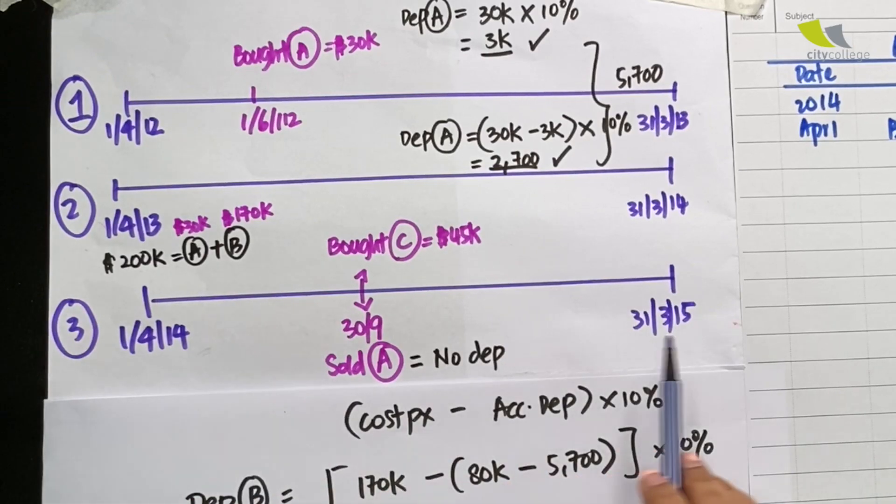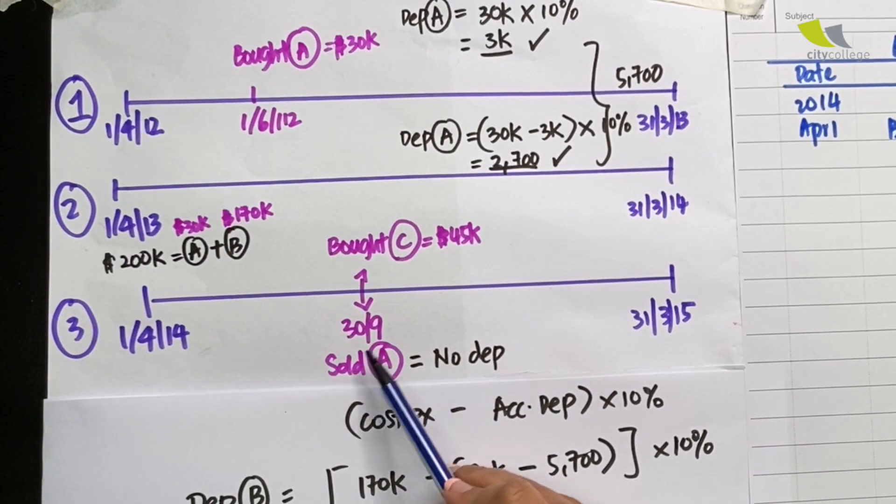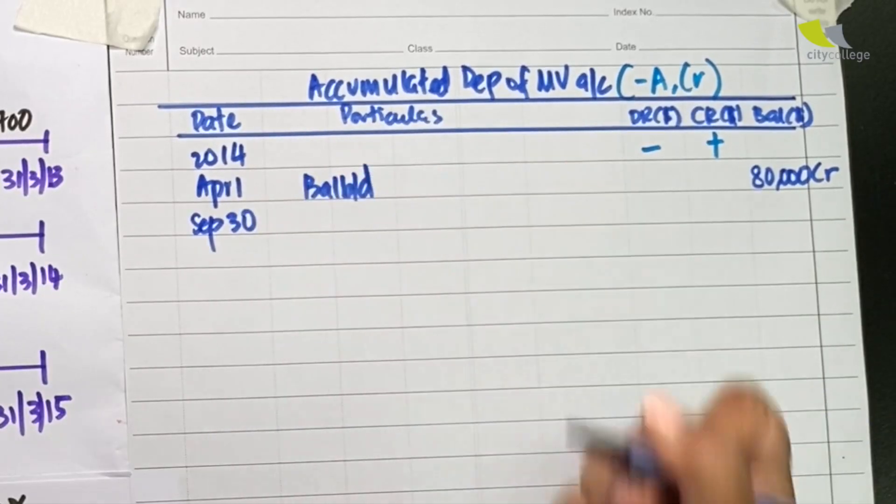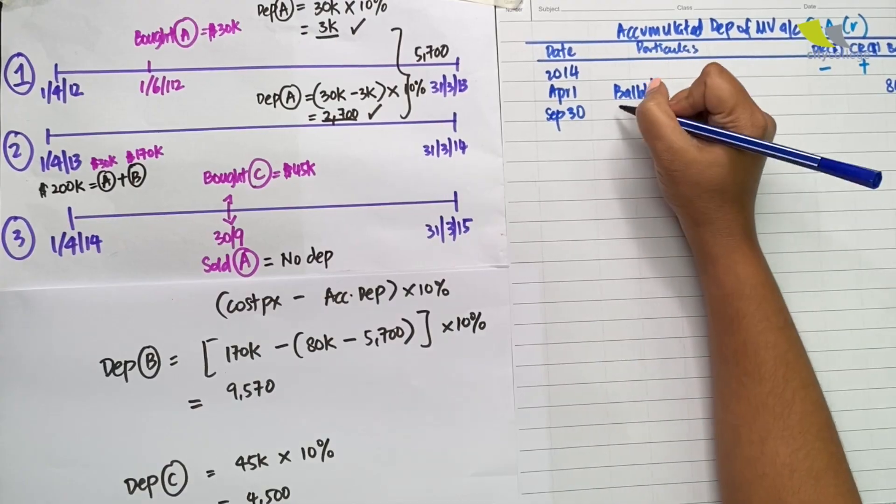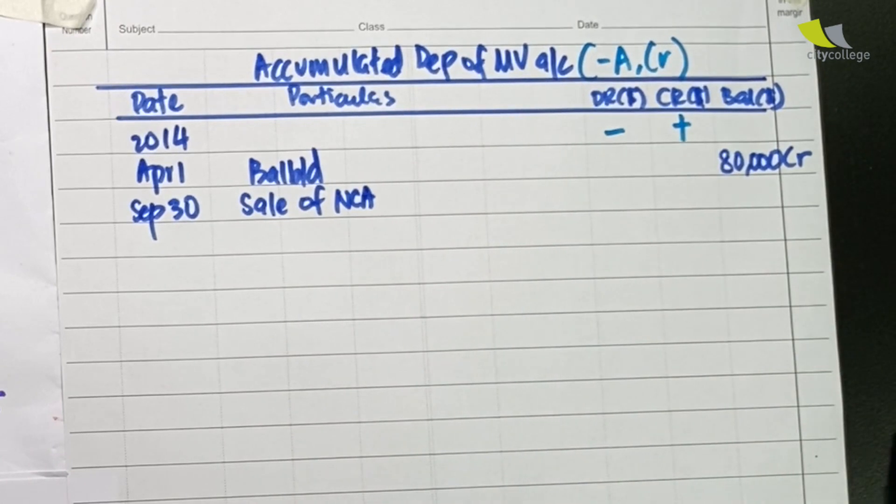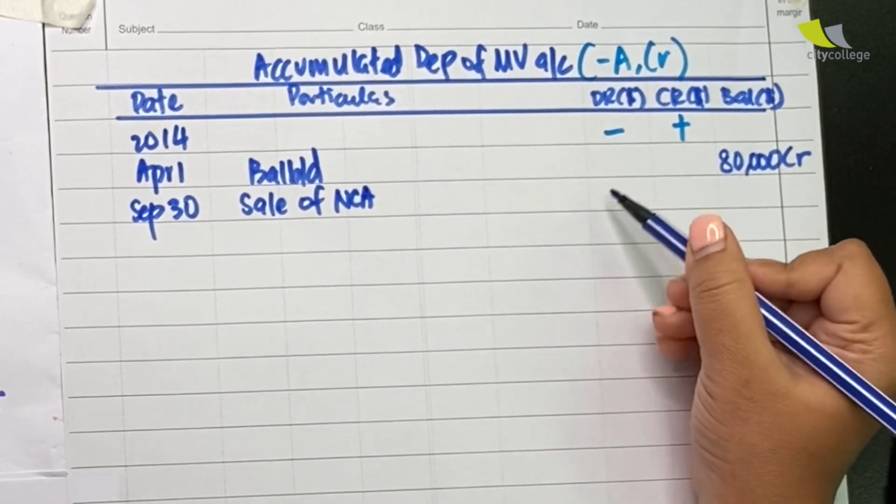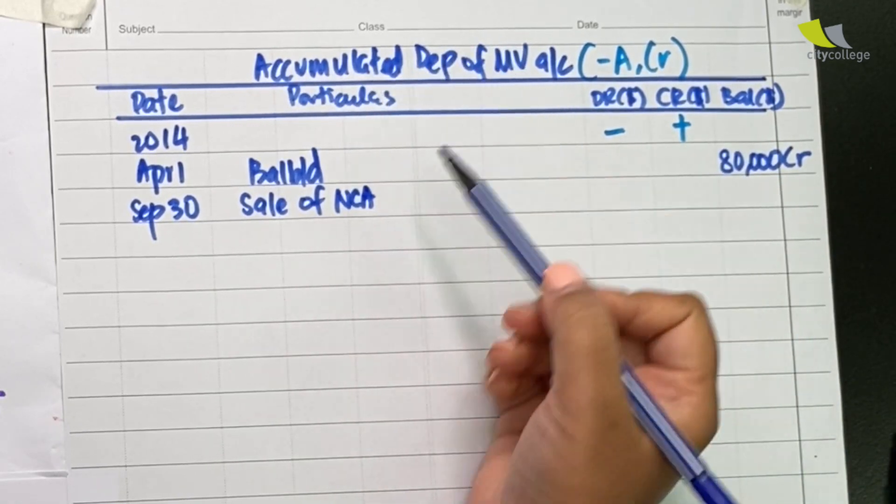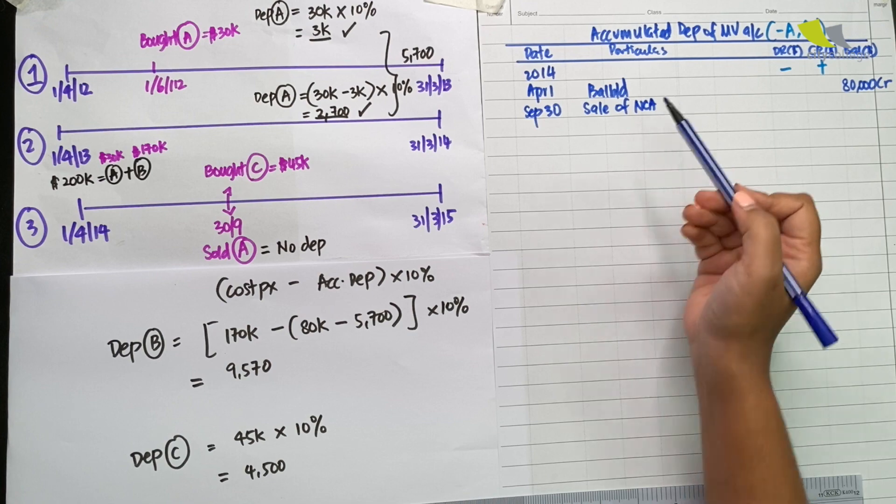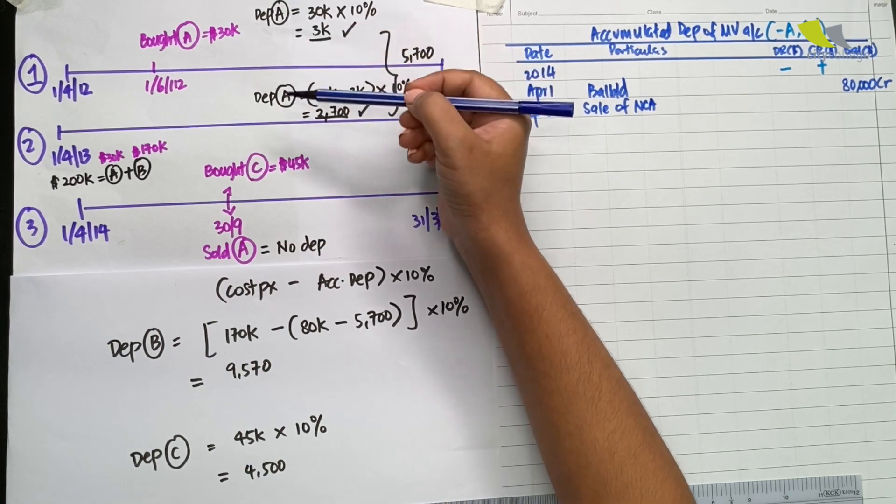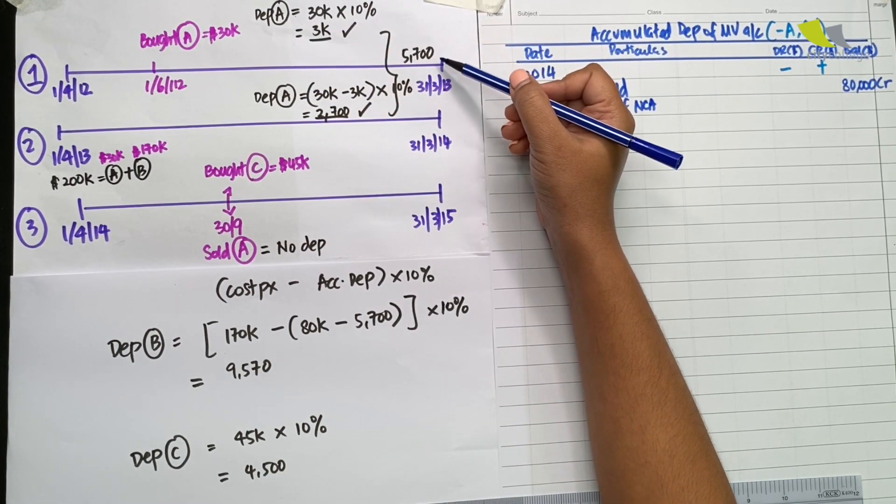Next, what happens within the year? On 30th September, we actually sold A. Let's update the date to September 30th. We sold A and we reflect that as sale of non-current asset. What figure do we actually place in the columns? We have to ask ourselves, what is the accumulated depreciation of the asset that you sold? Let's go back to A. A was the asset that we sold. The accumulated depreciation of A is actually 5,700.